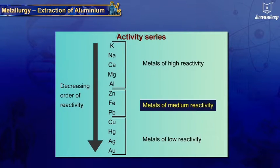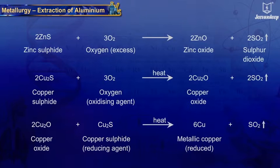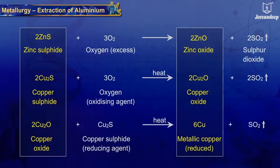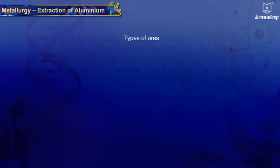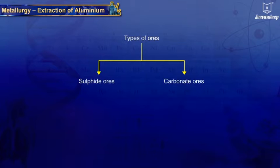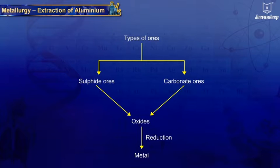Extraction of metals of medium reactivity. The metals in the middle of the activity series – zinc, iron, lead, etc. – are moderately reactive and usually present in nature as sulfides or carbonates. As reduction of oxides to give metal is easier, these are first converted into their oxides. Depending on the type of ore, whether sulfide or carbonate, the ores are processed differently to produce the metal oxides.